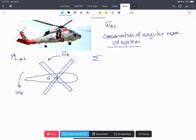So what we're saying is the sum of the angular momentum about g at state one over the system equals the sum of the angular momentum about g at state two for the system.